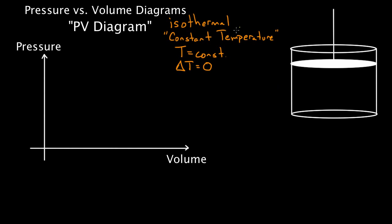One more important thing: remember, the internal energy of a gas is proportional to the temperature of a gas. So if the temperature doubles, the internal energy doubles. If the temperature doesn't change, the internal energy doesn't change. So for an isothermal process, not only is delta T equal to zero, but more importantly, delta U is also equal to zero. This is something you have to know.